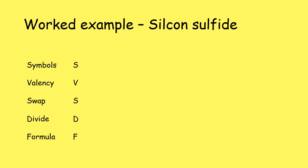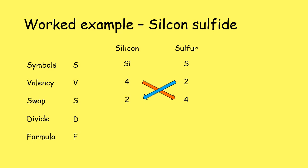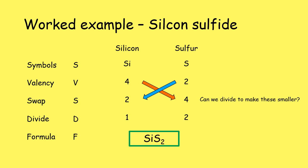One more example: silicon sulfide. Silicon is Si and sulfide comes from sulfur, S. Silicon has a valency of four because it's in group four; sulfur is in group six so it has a valency of two. When we swap those numbers, silicon gets the number two and sulfur gets the number four. Can we divide to make them smaller? Yes — dividing both by two gives silicon a one and sulfur a two. So the formula is SiS₂.